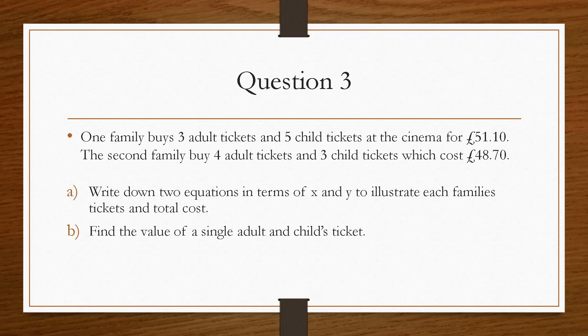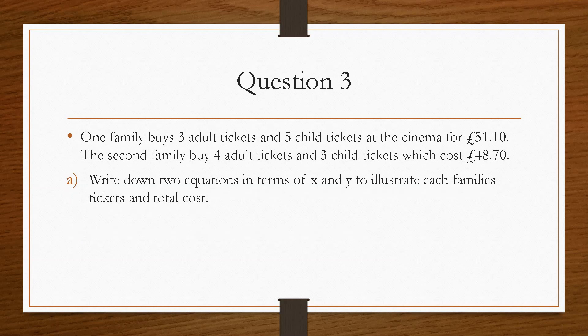So Question 3 is a problem-solving question and one that we will have to create the equations first. So the question says that one family buys 3 adult tickets and 5 child tickets at the cinema for a total cost of £51.10. And the second family buys 4 adult tickets and 3 child tickets, which costs £48.70. And we have to write down two equations in terms of x and y to illustrate each family's ticket and the total cost.